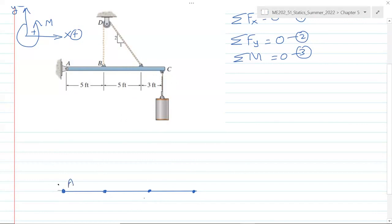At B we have this cable. Cable always supports the tension load which goes away from the point. So this is tension force at the cable.